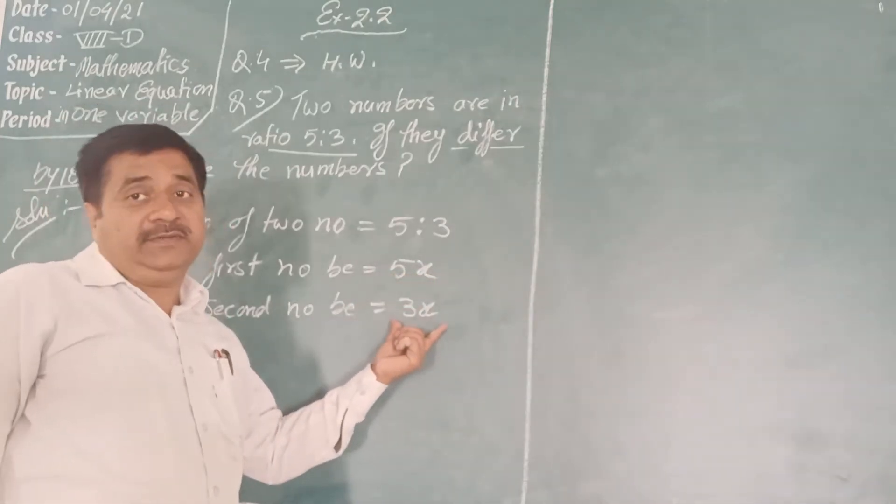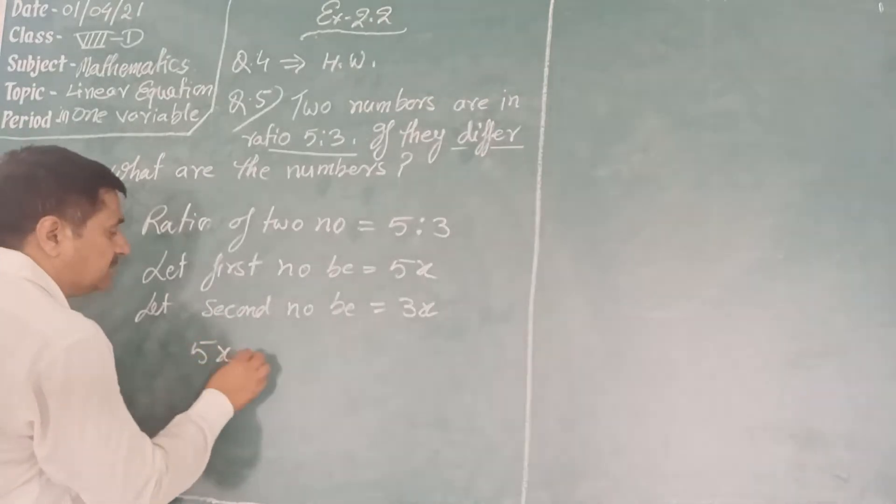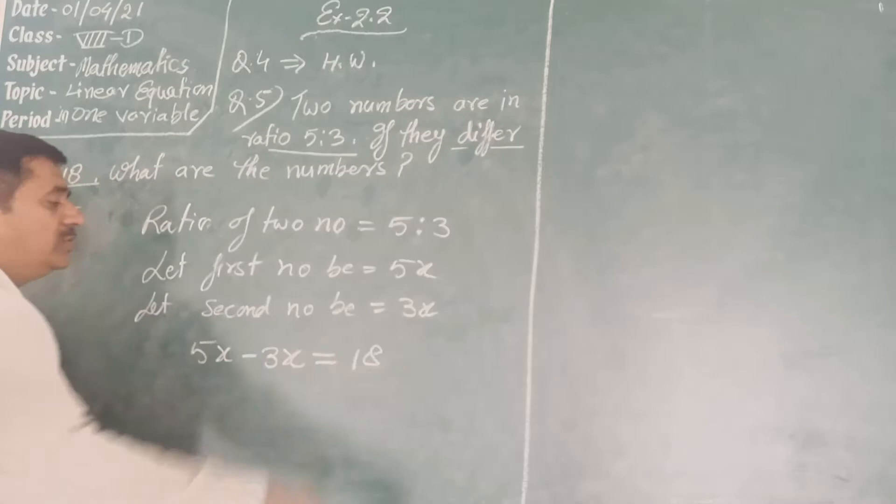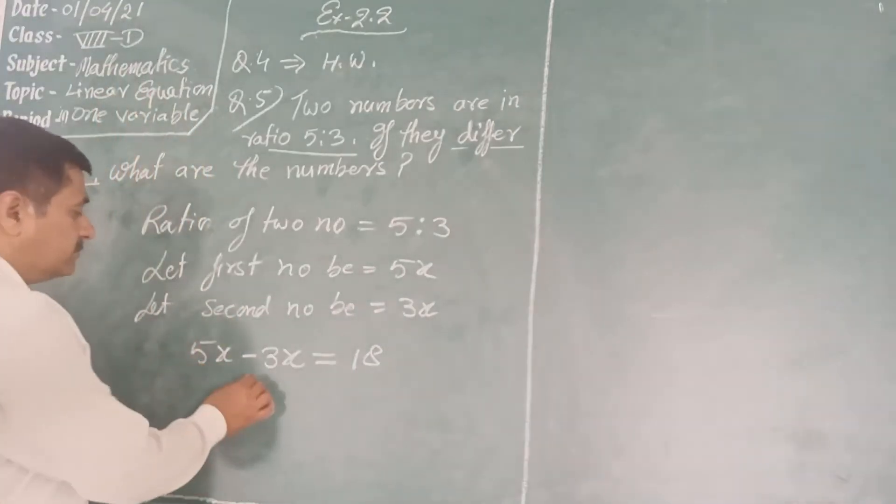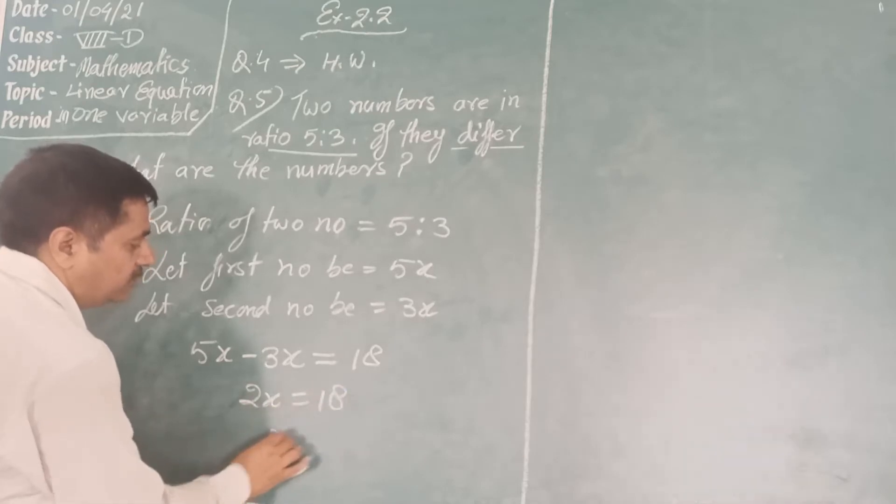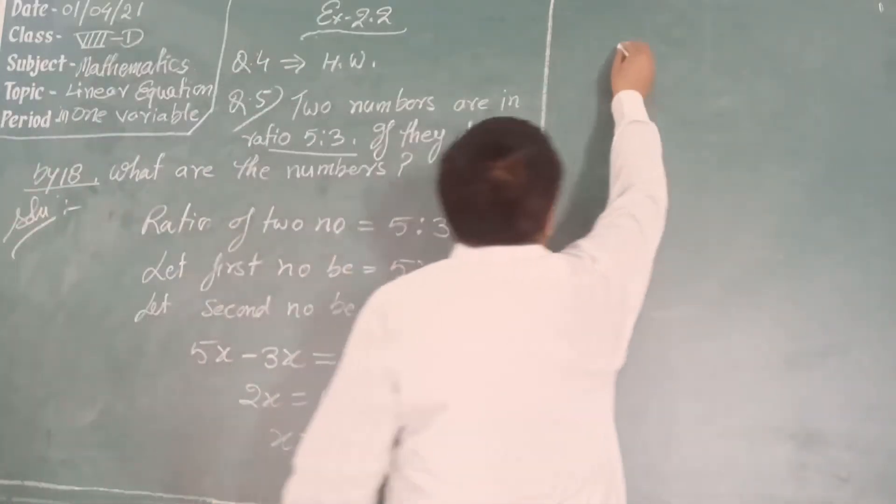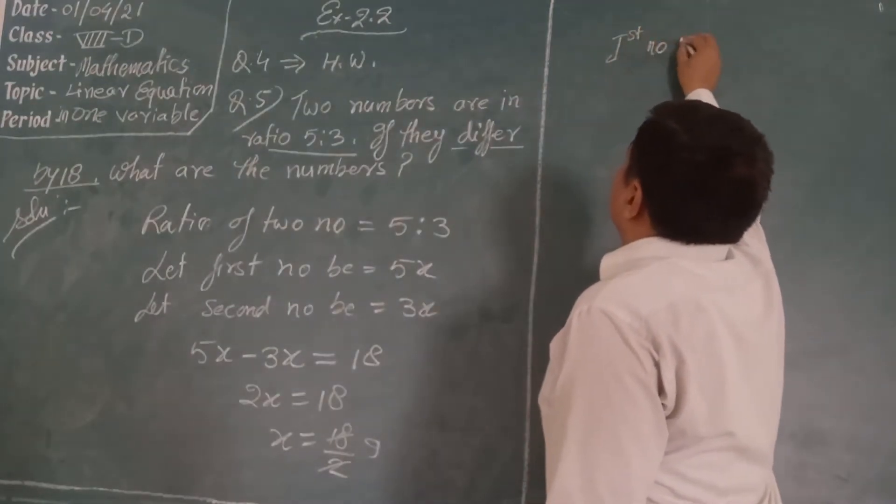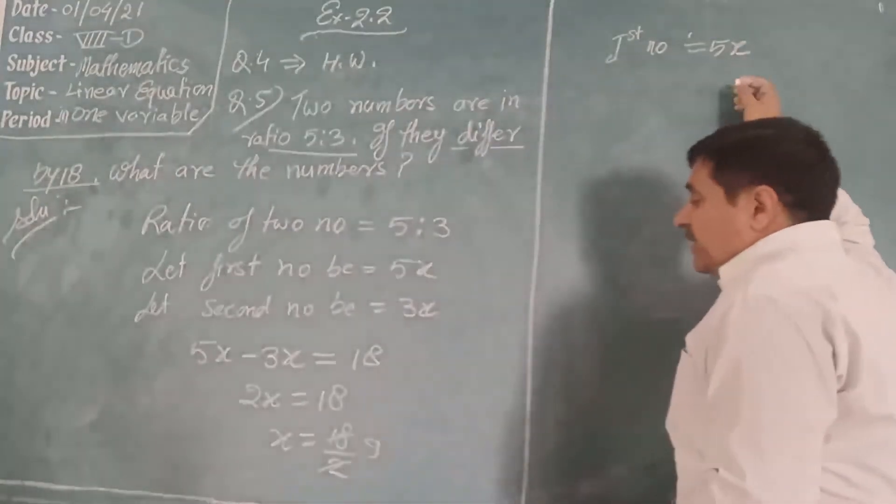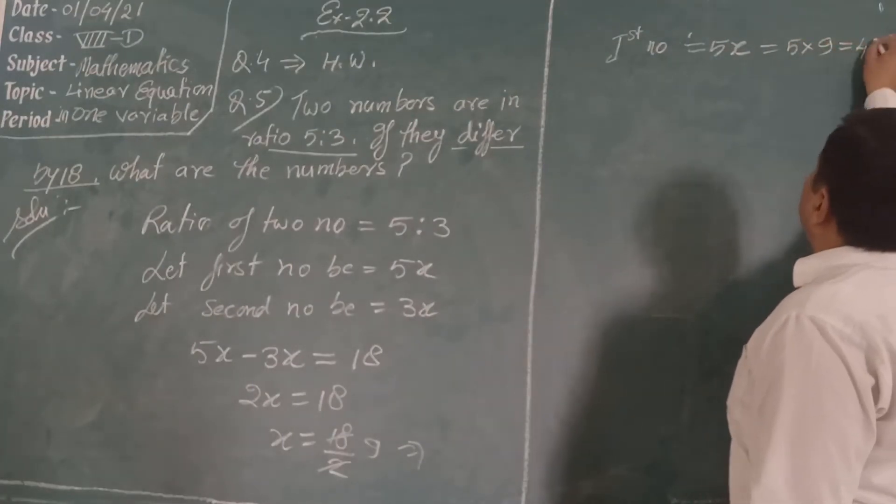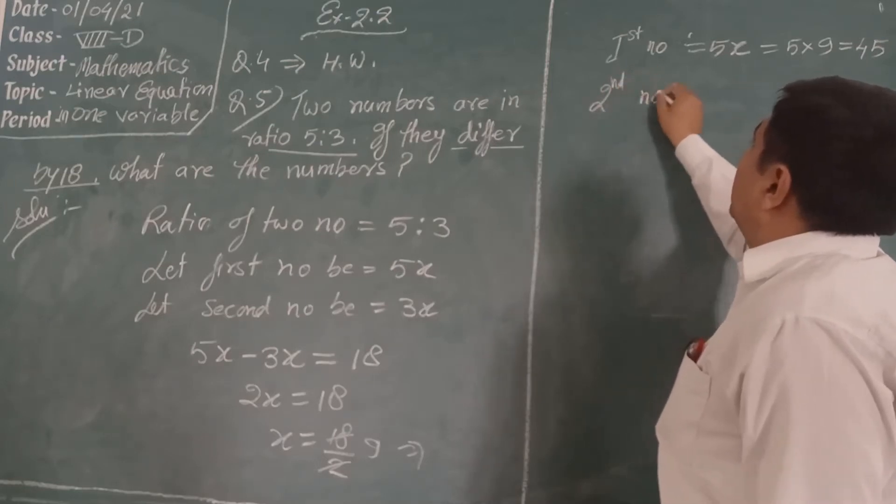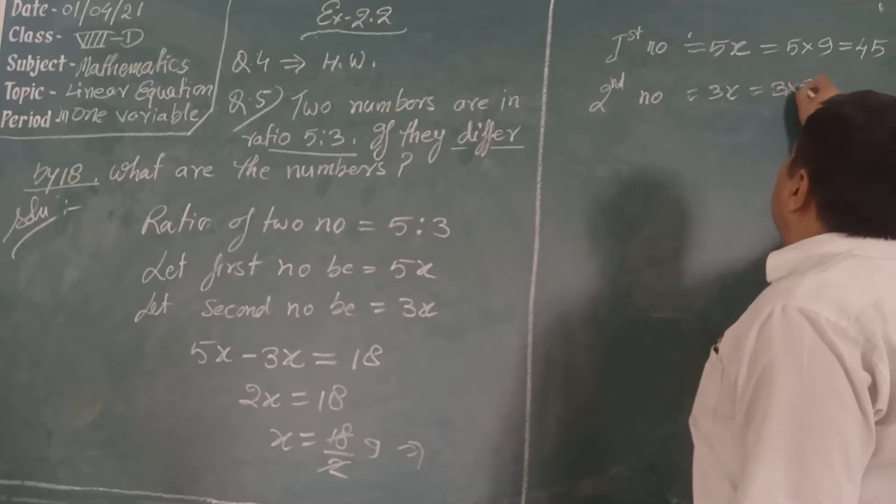5x minus 3x is equal to 18. This will be solved as 2x equals to 18, so x equals to 9. First number is equal to 5x, 5 into 9, and second number is equals to 3x, 3 into 9.